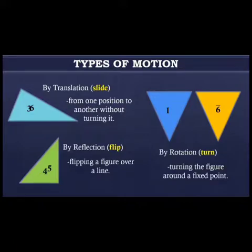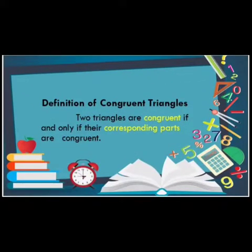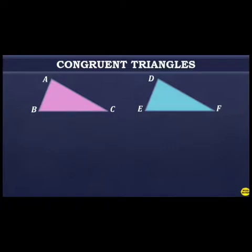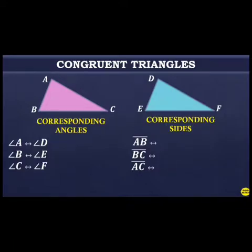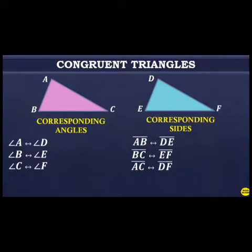Always remember the definition of congruent triangles: two triangles are congruent if and only if their corresponding parts are congruent. From these two congruent triangles — triangle ABC and triangle DEF — the corresponding angles are: angle A corresponds to angle D, angle B corresponds to angle E, and angle C corresponds to angle F. The corresponding sides are: AB corresponds to DE, BC corresponds to EF, and AC corresponds to DF.